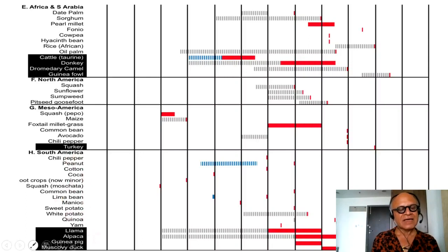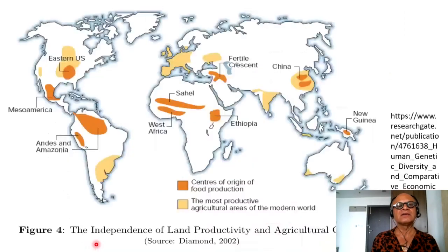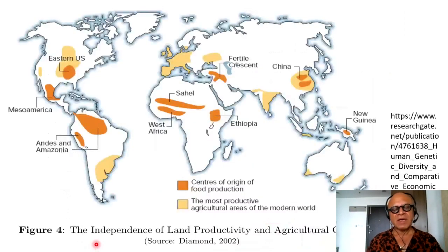South America also has llama, alpaca, guinea pig, and Muscovy duck among its domesticated animals. So that's another map here.